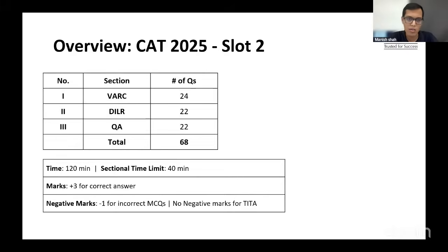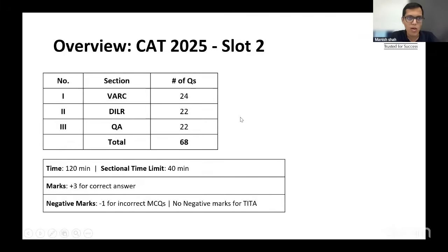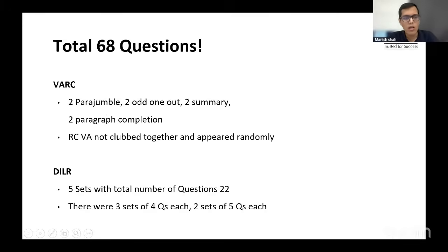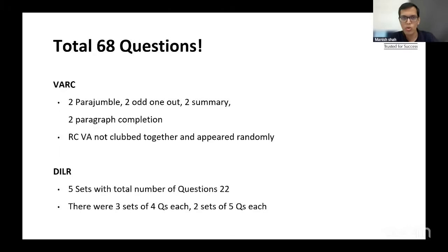The 40-minute time limit per section, plus 3 minus 1 marking, remained the same. There were an unusual number of TITA (type-in) questions found in both the first and second slots this year — that was a minor change worth noting. In VARC, we saw para jumbles make a re-entry: two para jumbles, two odd-one-out, two summary questions, two paragraph completion, and four RCs with four questions each.